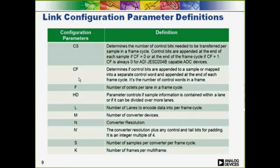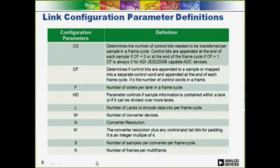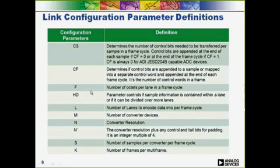If CF is 0, the control bits are appended to each sample. If CF equals 1, the control bits are put into a control word and placed at the end of the frame. For all ADI devices using JESD204B, CF is always 0. F is the number of octets per lane in a frame cycle. HD is set if a converter sample is split across more than one lane. L is the number of lanes, M is the number of converters, N is the converter resolution, and N-prime is the nibble group size — a multiple of four that includes converter samples, control bits, and tail bits, sometimes referred to as the JESD204B word size. S is the number of samples per converter per frame, and K is the number of frames in a multi-frame.